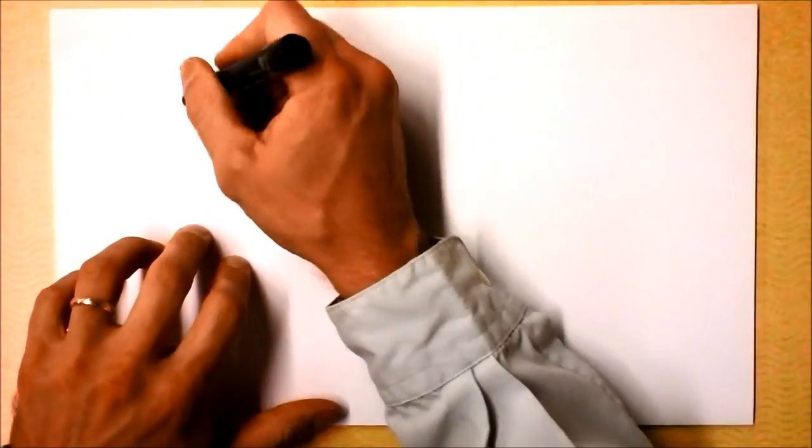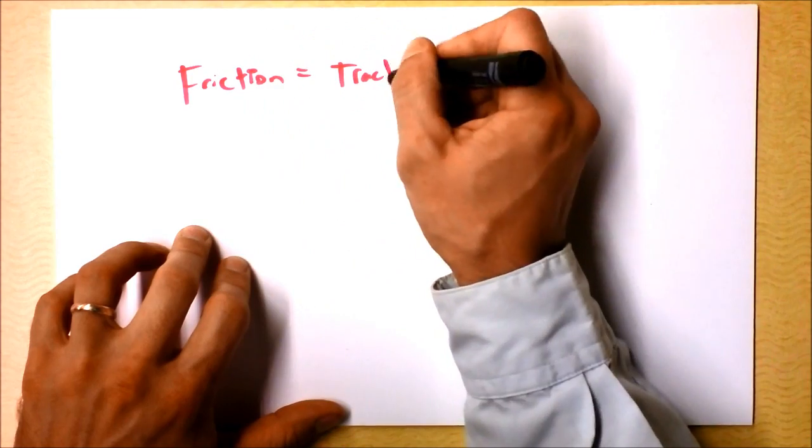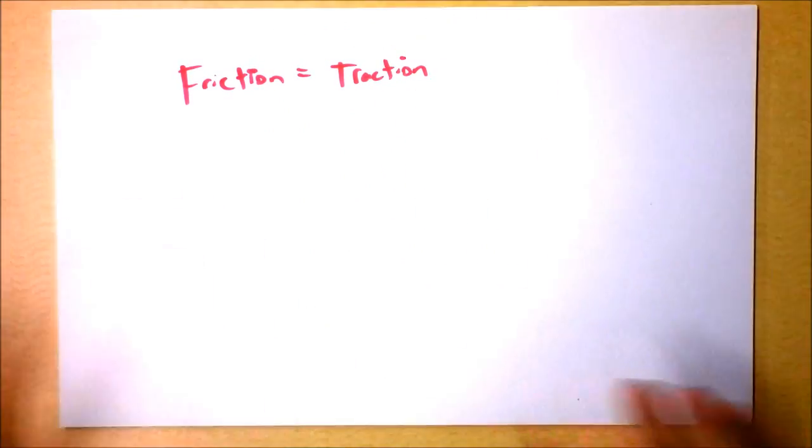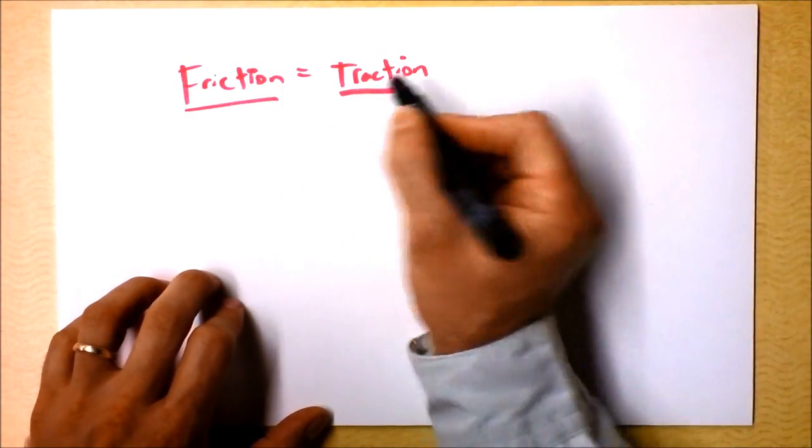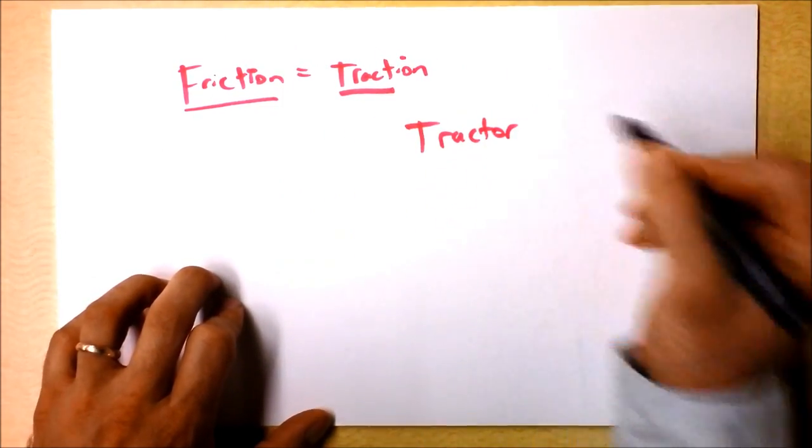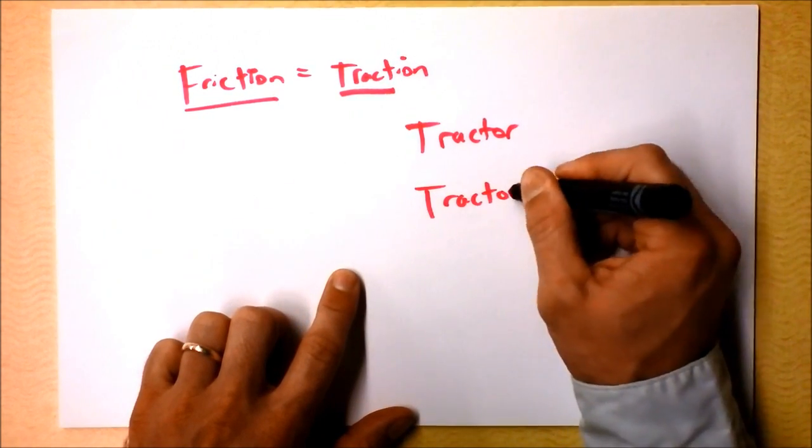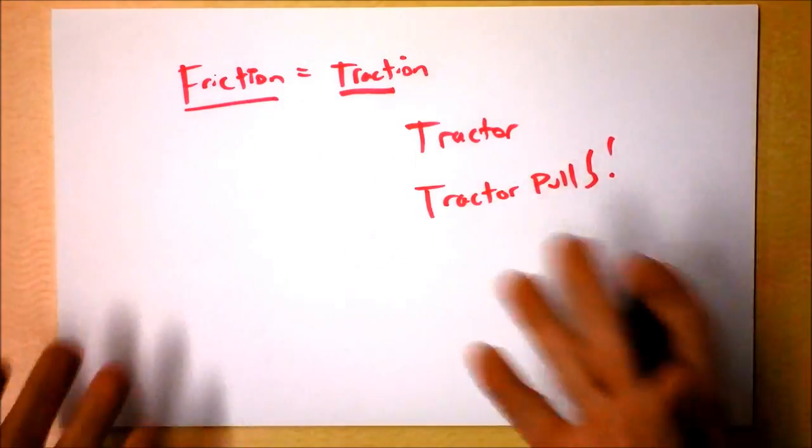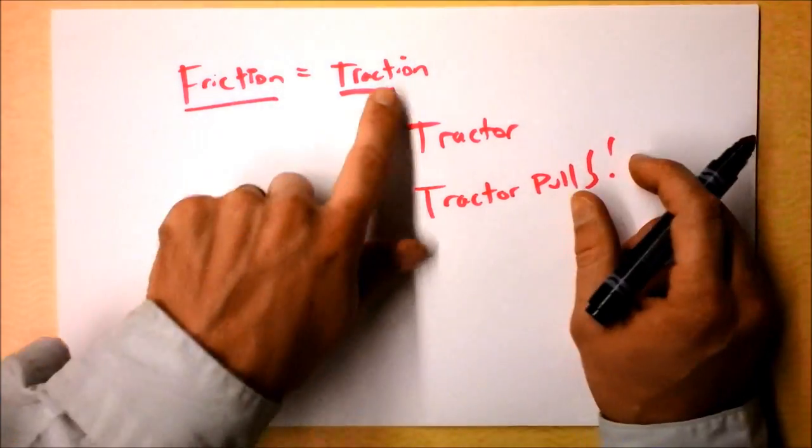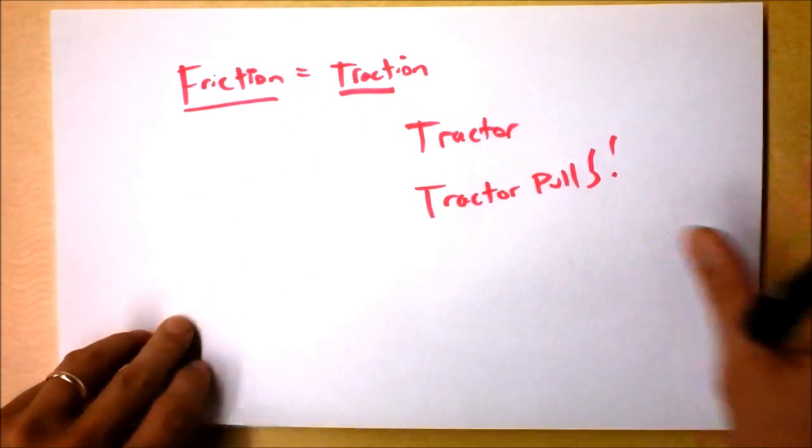Some people call friction traction, I hope that's okay with you. I'll just make you a little cool slide. Friction equals traction, and if you're thinking you need a lot of traction, then you're thinking you need a lot of friction. This comes from the root of the word tractor also, which has something to do with pulling. So friction enables you to do pulling with a tractor because of traction.